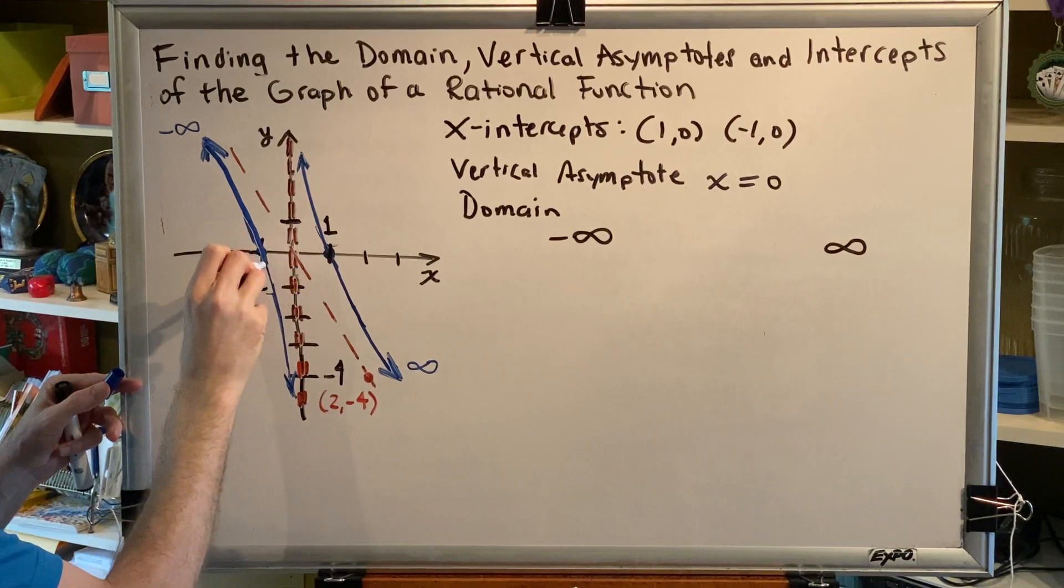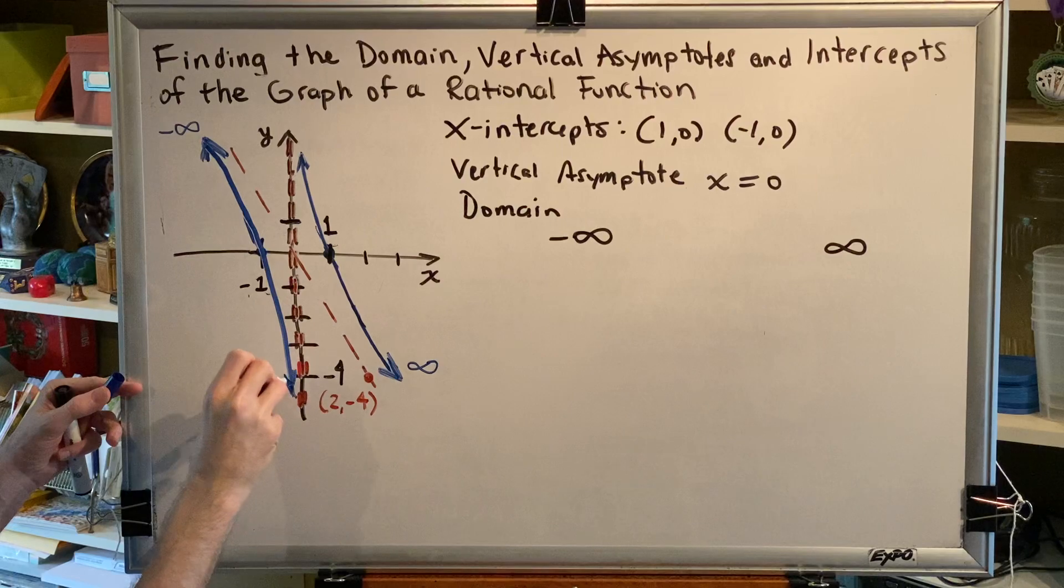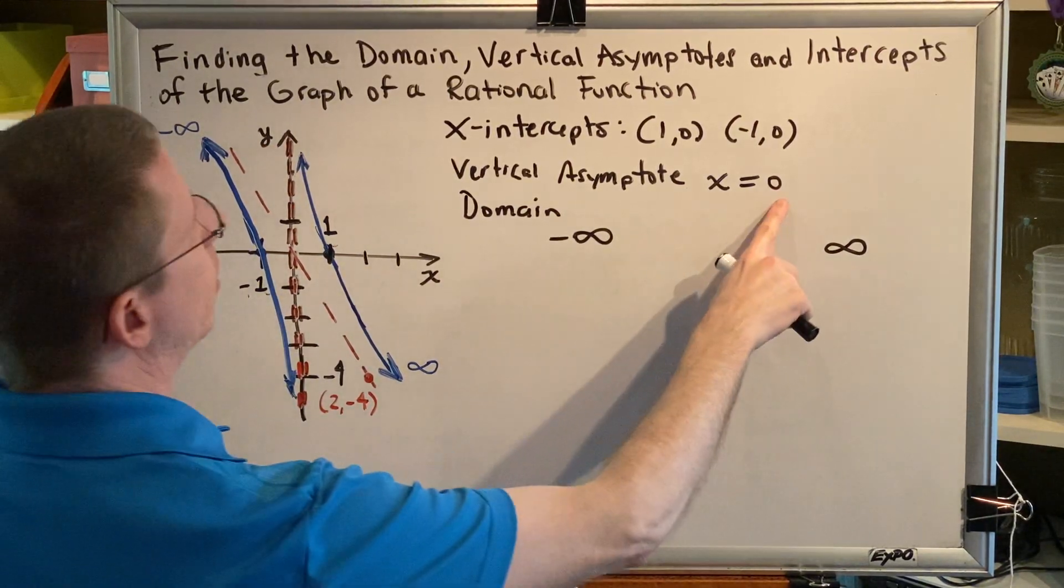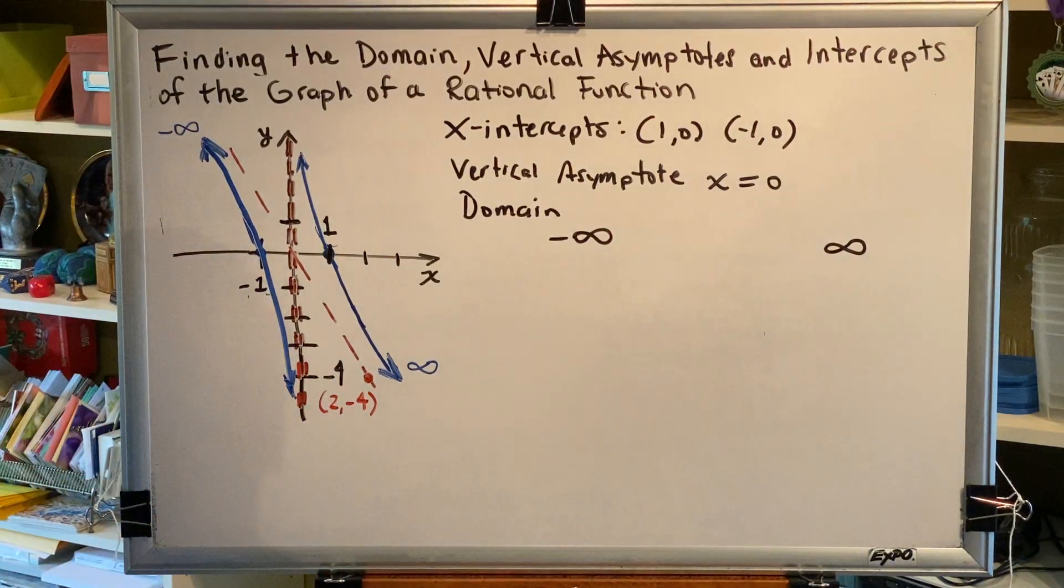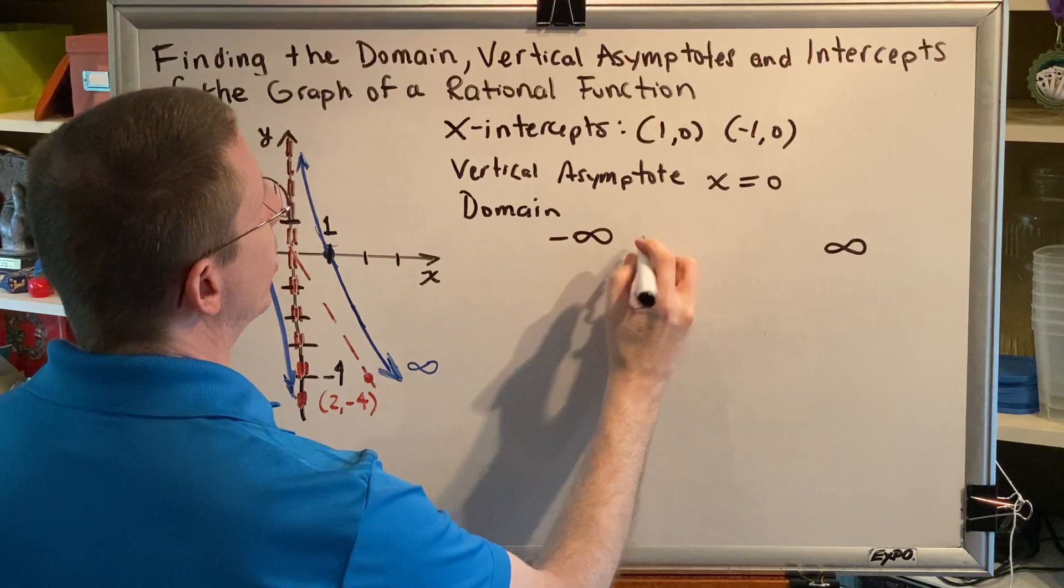There is something that is blocking us from making this journey. And the thing that's blocking us from making the journey is this vertical asymptote. Where is the vertical asymptote located? Zero. So our domain consists of all real numbers except zero. And we have to write our domain so that we skip over zero.